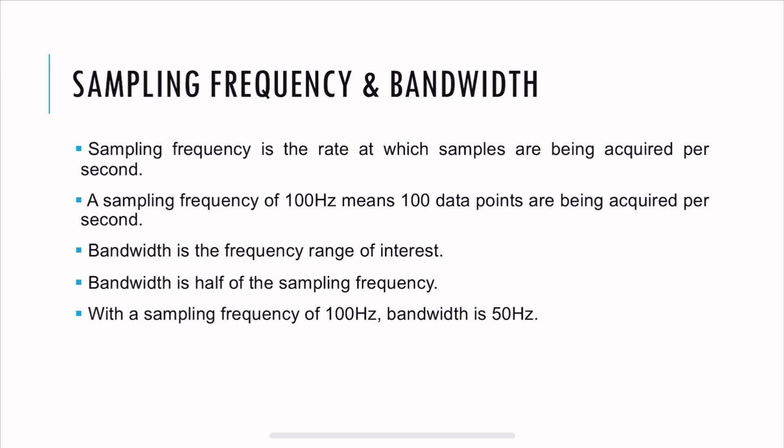So let's talk about some terms here. Sampling frequency. What is sampling frequency? It is the rate at which samples are being acquired per second. So if there's a sampling frequency of 100 Hz, it means that 100 data points are being acquired every single second.